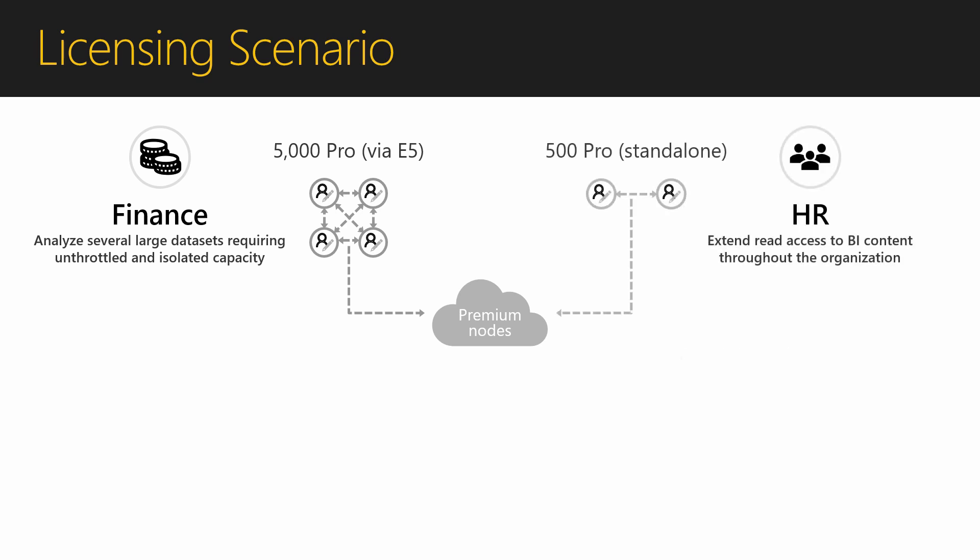The HR division has already purchased Power BI Pro standalone licenses for many of their users and wants to extend read access to reports throughout the organization. The HR division purchases Power BI Premium to extend read access to reports and dashboards across their organization. Power BI Premium includes Power BI Report Server, extending hybrid capabilities including on-premises report publishing. This way, the HR team can deploy and distribute interactive Power BI reports completely within the boundaries of their firewall.